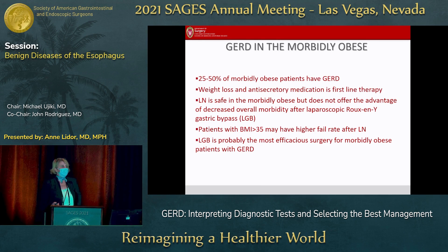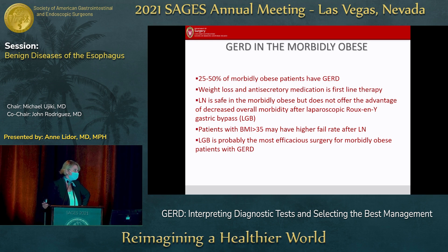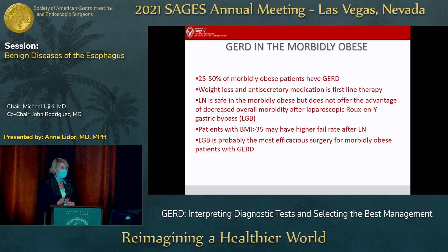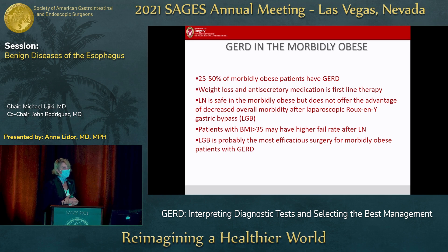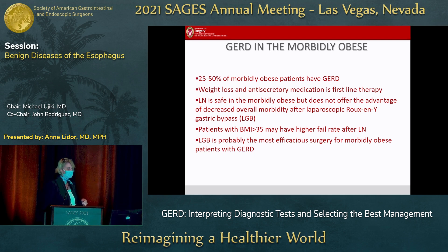Some special considerations for patients with reflux who are morbidly obese: lots of obese patients have reflux. Most of the time we'll try weight loss and anti-secretory medication. But if an obese patient comes to see you for really bad reflux, in general in my practice I tend to offer them a Roux-en-Y gastric bypass as their first operation, because we know anti-reflux surgery in obese patients may have a higher failure rate, and patients also get the added benefit of reduced comorbidities and weight loss from bariatric surgery.